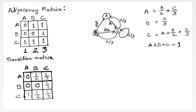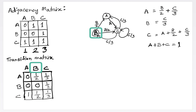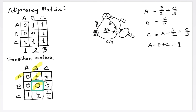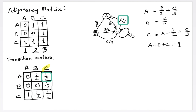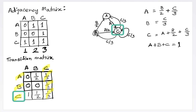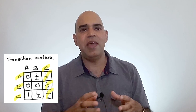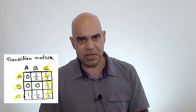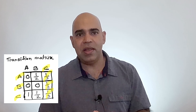The transition matrix indicates what proportion of a website's importance is distributed via its outgoing links. For example, A distributes its entire importance to C. B distributes half its importance to A, zero to B, and half to C. C distributes one third of its importance to A, one third to B, and one third to itself. This transition matrix plays a vital role in the PageRank algorithm.